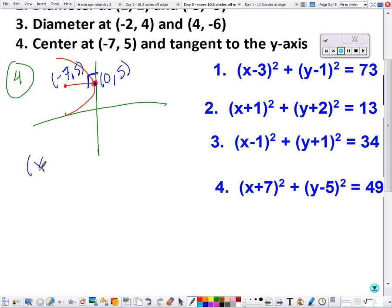So setting up my equation, and then we can plug in (0, 5). Oh no, now I can count my radius, I don't even have to solve for it. If we go from -7 to 0, the radius is 7, so r squared is 49.